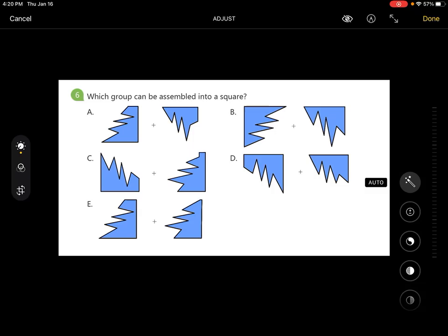Okay, time is up. Let's check the question together. Which group can be assembled into a square? We have been given five options, among which one is correct.